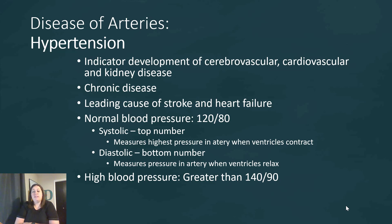High blood pressure is anything greater than 140 over 90. If the systolic number is higher than 140, or the diastolic is higher than 90, you have a blood pressure issue. This is normally known as Type 1 hypertension. Type 2 is more severe — this is when your numbers are higher than 160 over 100 on a regular basis.